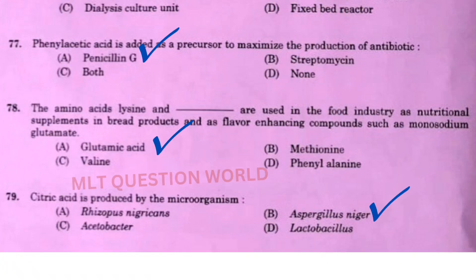Next question: The amino acid lysine and dash are used in the food industry as nutritional supplements in bread products and as flavor-enhancing compounds such as monosodium glutamate — the right answer is option A, glutamic acid. Next one: Citric acid is produced by the microorganism — the right answer is option B, Aspergillus niger.